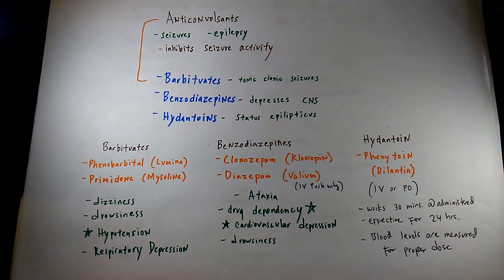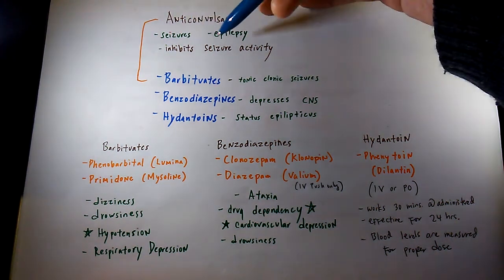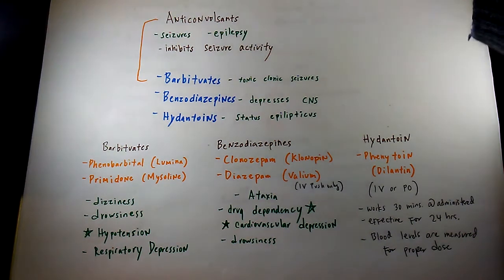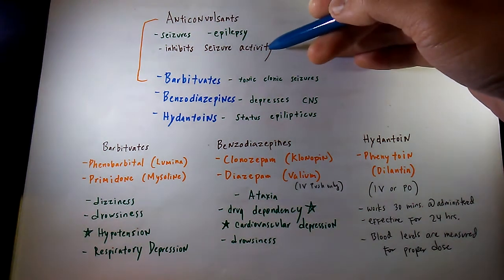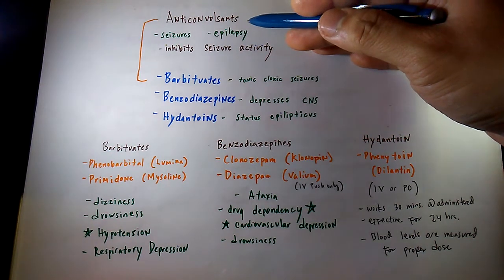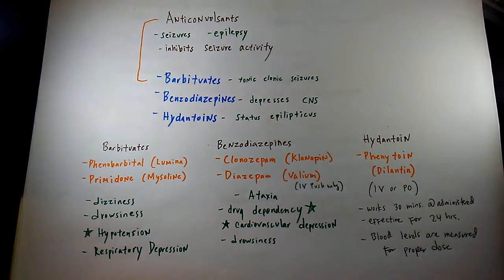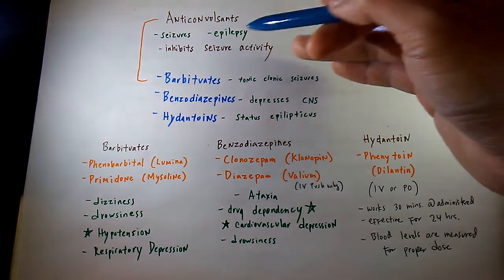Today we're going to talk about anticonvulsants, which are mainly used for seizures and epilepsy, hence why they're called anti-epileptic or anti-seizure drugs. Basically, they inhibit seizure activity. They can also be used as mood stabilizers for treating bipolar disorders and other personality disorders. Let's quickly go over how anticonvulsants work.